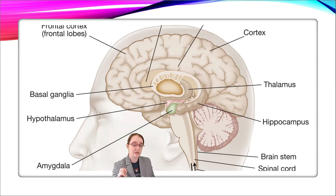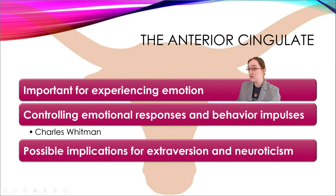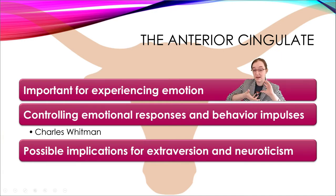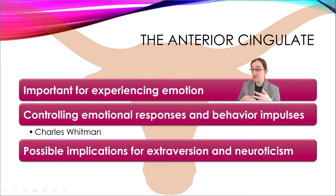Now we're going to talk about the anterior cingulate. This little chunk of brain is important for experiencing emotion. It actually works kind of as a counterbalance to the amygdala — it inhibits the amygdala — and it seems to be related to controlling emotional responses and behavioral impulses.